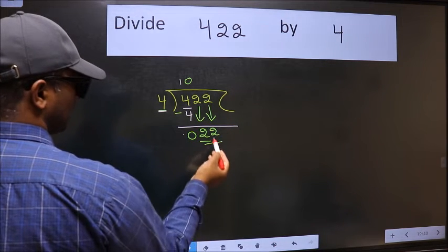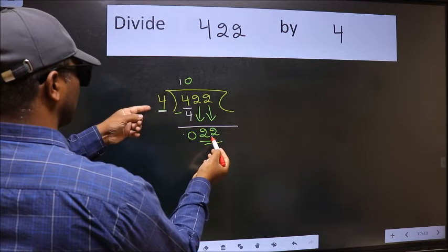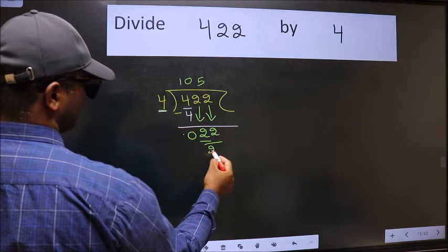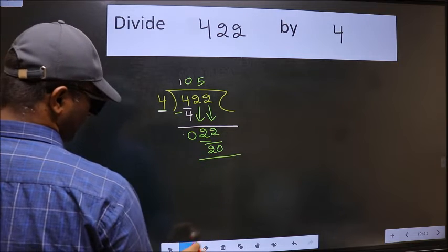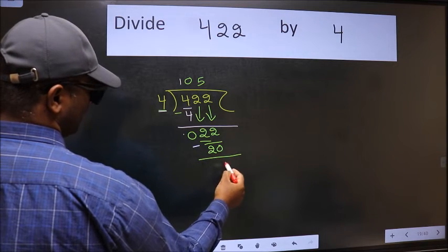Now 22. A number close to 22 in the 4 table is 4 times 5, which is 20. Now we should subtract. We get 2.